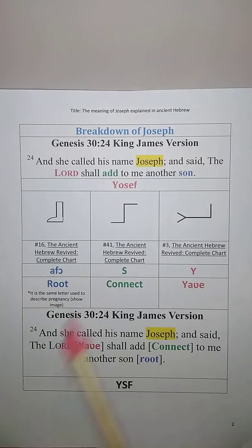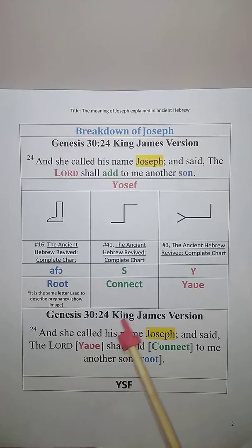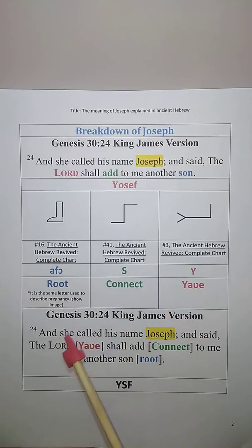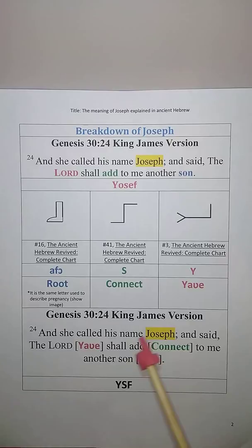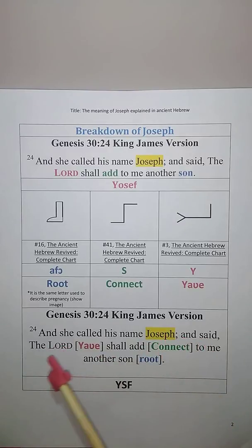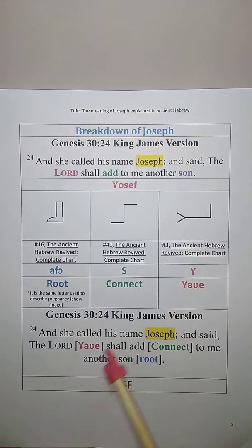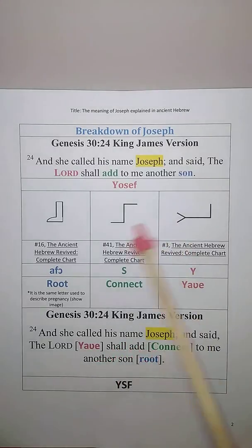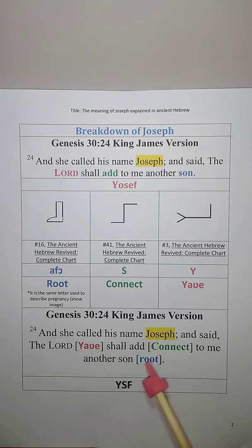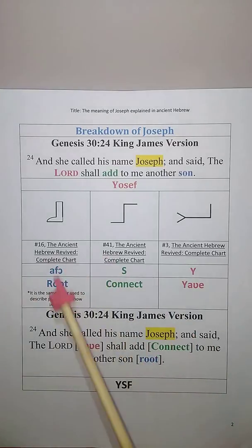So in Genesis 30 verse 24 in the King James Version, I read: And she called his name Yosef, and said, The Lord — Yahweh, which is the Y — shall add, or connect, the Su, to me another son. The Afo: root.